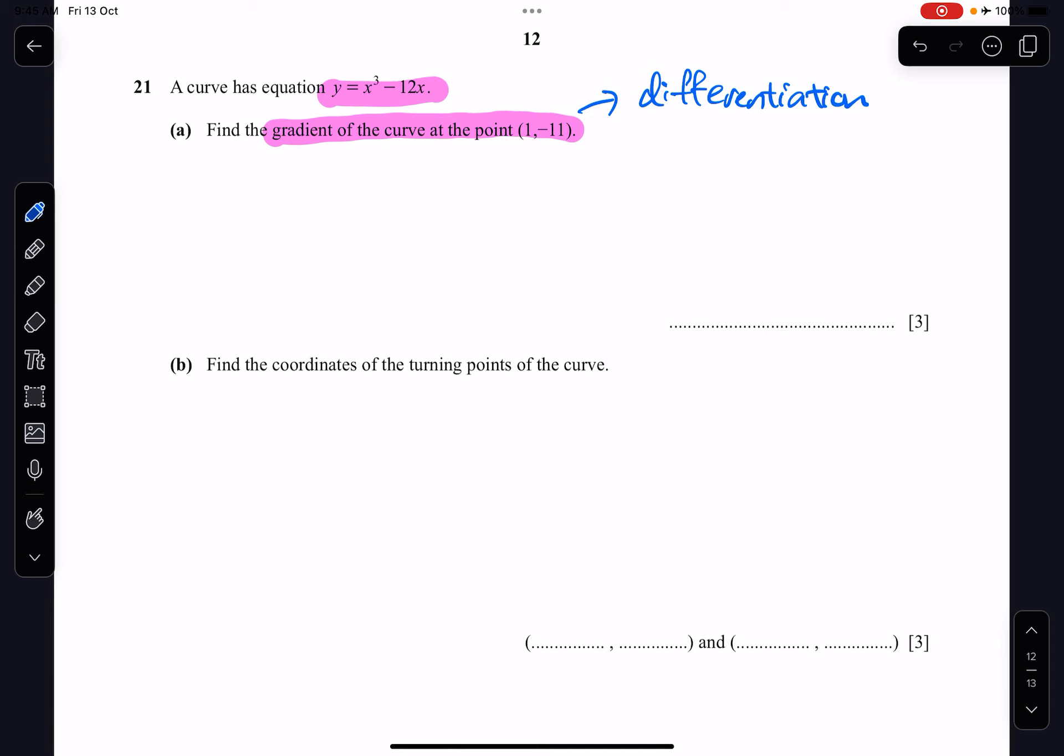Because we are tasked to find the gradient of the tangent at a curve at a point 1 negative 11. So how do we do that? First thing, we are going to write the equation of the curve y equals to x cubed minus 12x. So dy dx is equals to 3x squared minus 12. So this is the expression for dy dx.